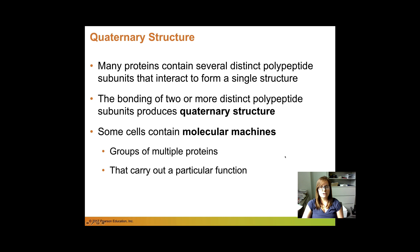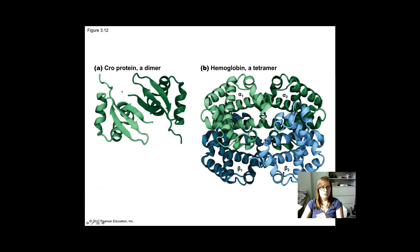The quaternary structure is when two polypeptides, two distinct polypeptides interact with each other. Some of these contain molecular machines or groups of multiple proteins that carry out a particular function. So the Cro protein is a dimer made up of two peptides and hemoglobin that we talked about when we talked about sickle cell is actually made of four distinct polypeptides that then come together. And only when those all four of those subunits come together is the protein now functional.